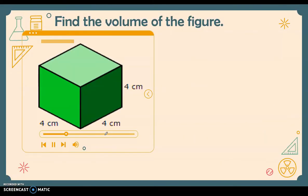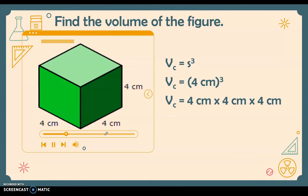Let's have more examples. To find the volume of this cube, we use the formula V = s³ and substitute the value of the side, which is 4 centimeters. So we have 4 times 4 times 4, which equals 64. We also multiply the units: centimeter times centimeter times centimeter gives us cubic centimeters. When dealing with volume, we always use cubic units.